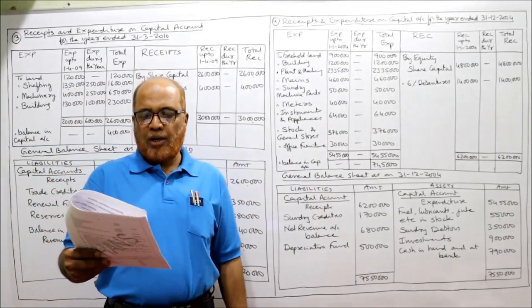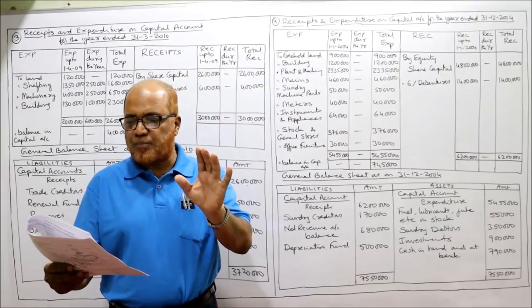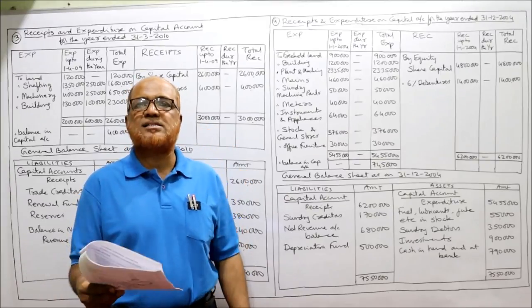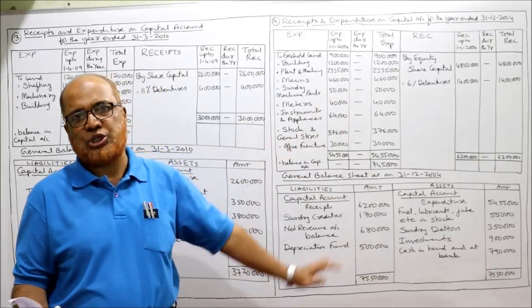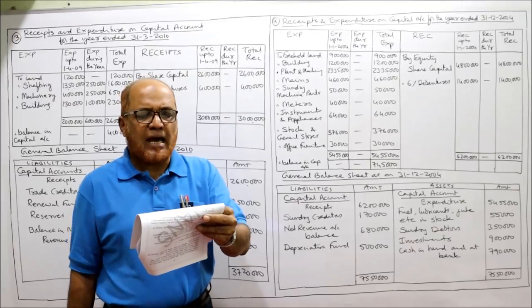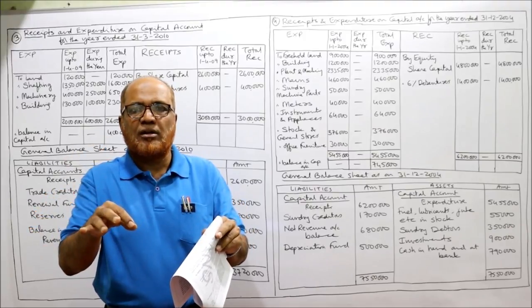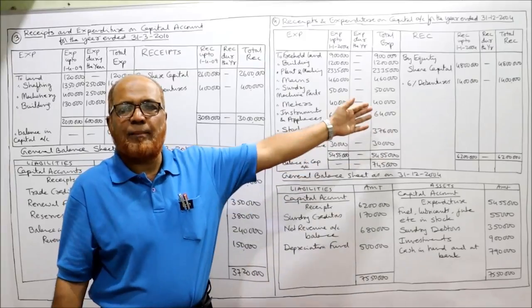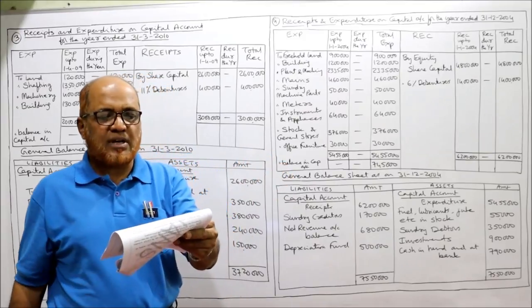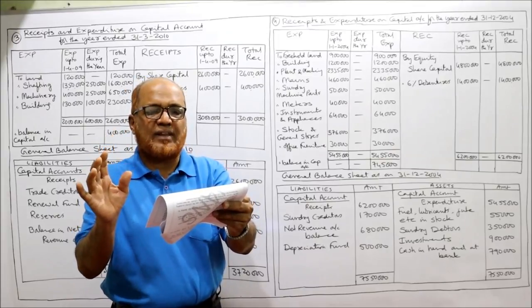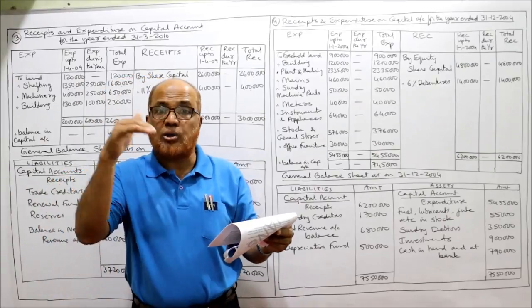Now reading problem number 4: from the following particulars for the year 31st December 2004, prepare under the double account system the receipts and expenditure on capital account and general balance sheet of an electric supply company. A trial balance is given from which we prepare the balance sheet. Authorized capital — 10,000 equity shares of 1,000 each, 1 crore — is not recorded in the balance sheet; it is only information.